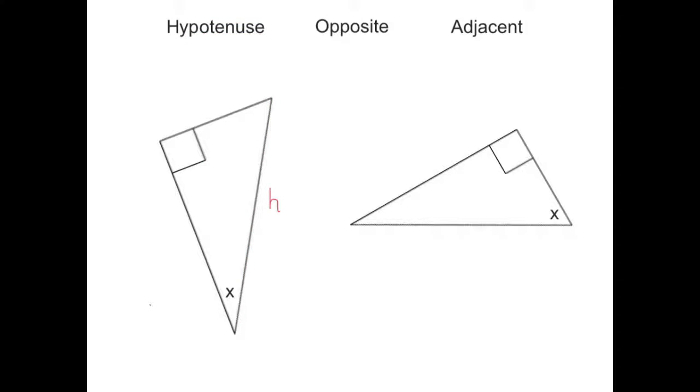So I'm going to label this hypotenuse, H-Y-P. The next side we label is the opposite side. And again, it's in relation to angle x. So there's my angle x. The side that is opposite it is this one here.